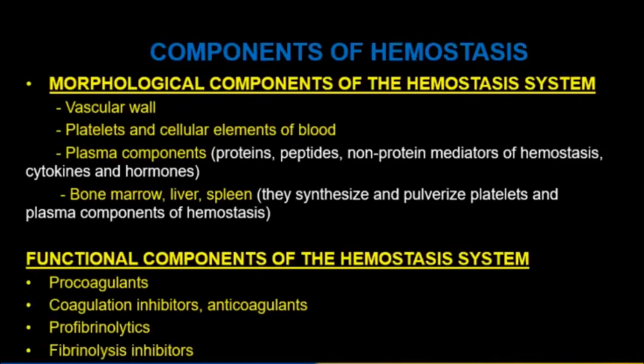Components of hemostasis include morphological components: the vascular wall, platelets and cellular elements of blood, plasma components, bone marrow, liver, and spleen. Functional components include procoagulants, inhibitors, anticoagulants, profibrinolytics, and fibrinolysis inhibitors.